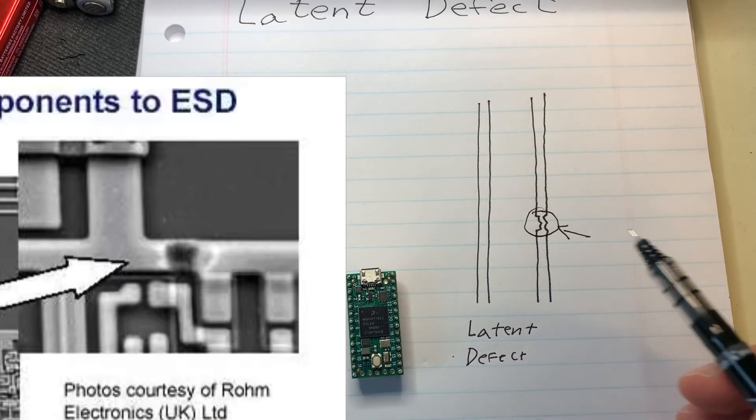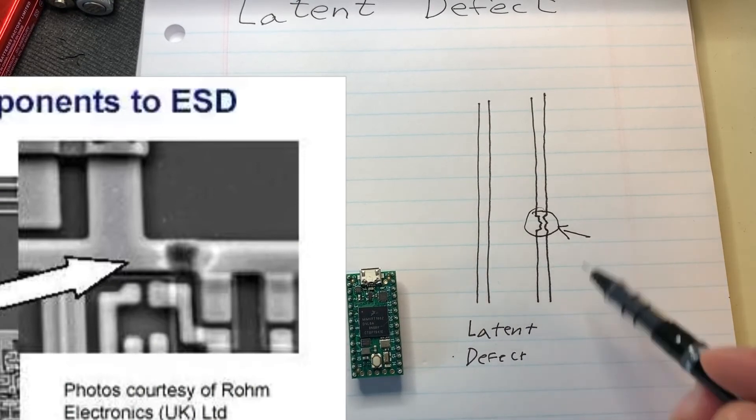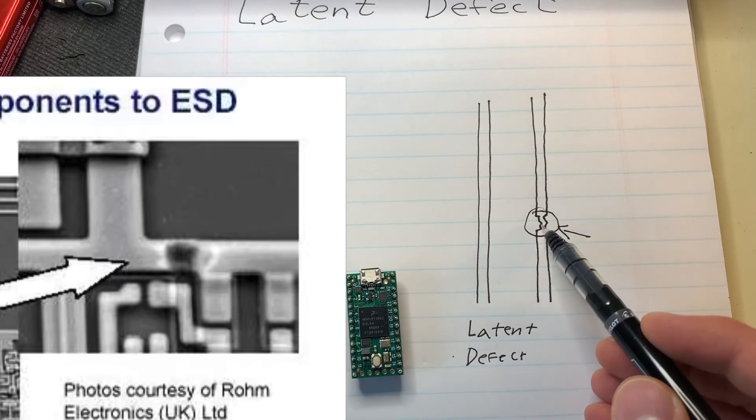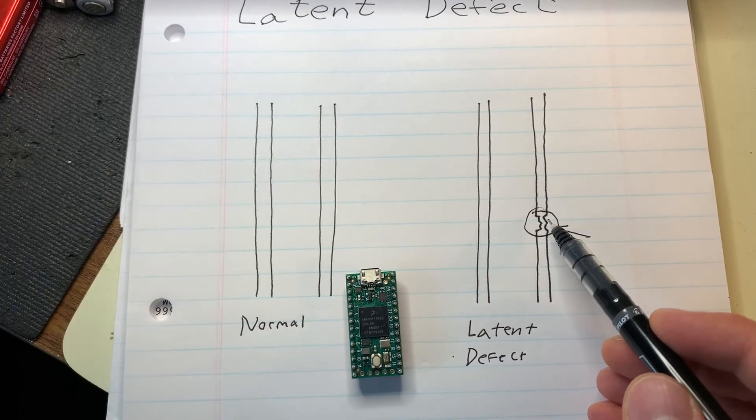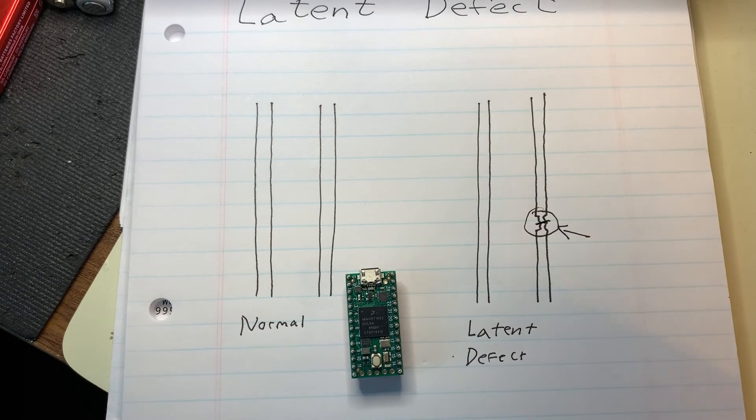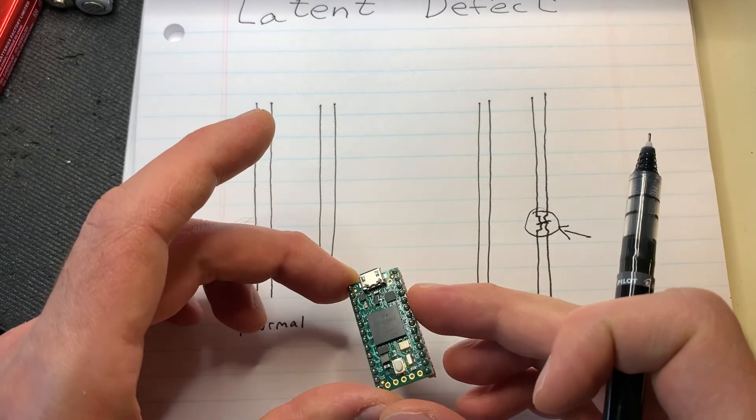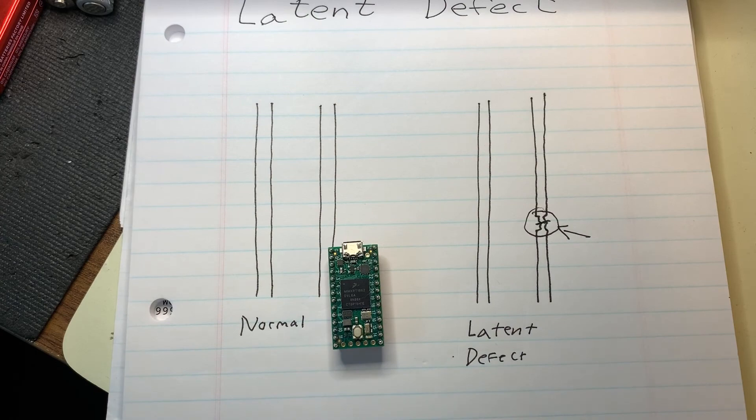And as this is continually used, this can continually start eroding away and eventually break or have an intermittent connection, which can cause the entire system to stop working for what seems like no reason at all.